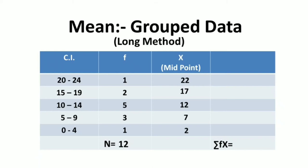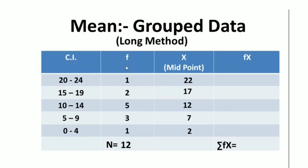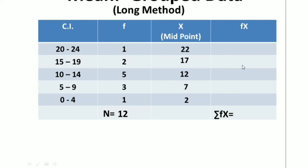The midpoints are 17, 12, 7, and 2. Now we multiply the frequency of each class interval with the midpoint of that class interval. So we get the values 22, 34, 60, 21, and 2. Now we add them and get the total: 139.